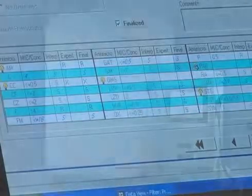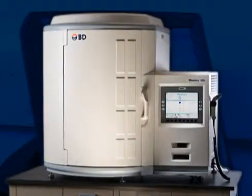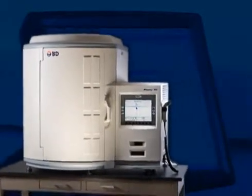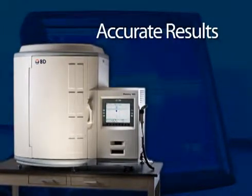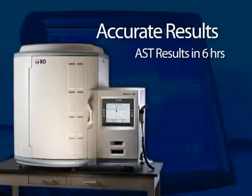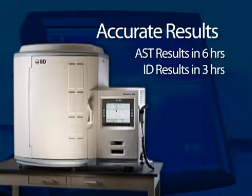BD Phoenix, like other Becton Dickinson systems, will provide accurate and reproducible results. AST results are generated in as little as six hours and identification in as little as three hours. Certain organism-drug combinations may take longer but can be reported as soon as available.